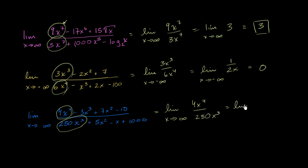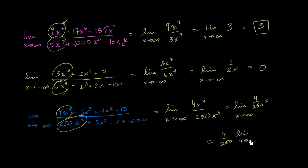So this is going to be the same thing as the limit as x approaches infinity of 4x to the 4th over 250x to the 3rd, which simplifies to the limit of (4/250) times x as x approaches infinity. The limit of x as x approaches infinity just keeps growing forever, so this is infinity. Infinity times some constant is still infinity, so the limit is unbounded — it's infinity.